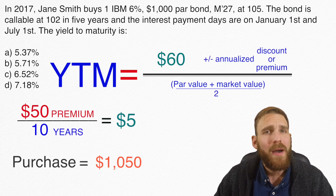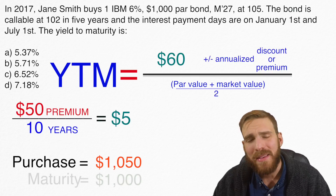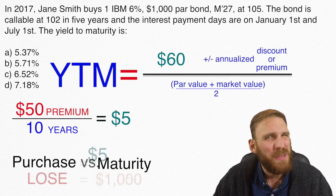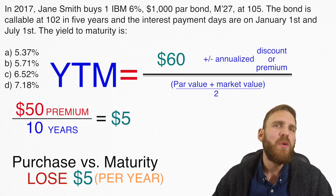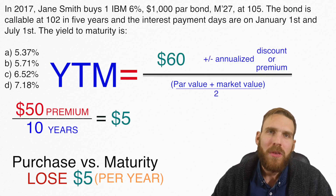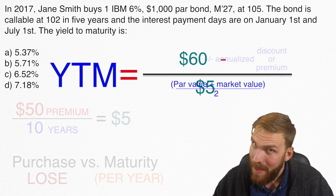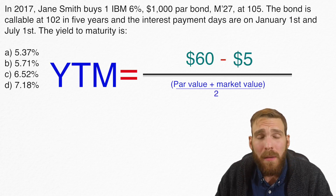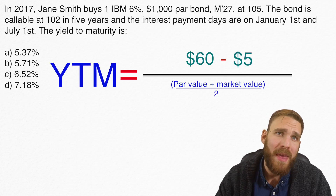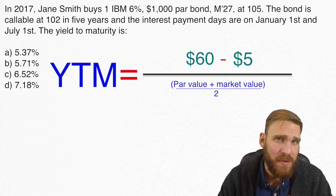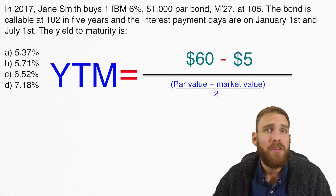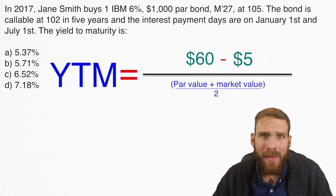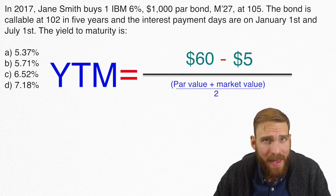We're buying the bond at $1,050 and it's going to pay us $1,000 in 10 years. So it's kind of like we're losing $5 a year. Whenever you have a premium, you subtract that number — and that makes sense because you're losing money over time. You subtract that number from the annualized interest you get. If this was a discount, you would add. And that's it for the numerator — we're done with that.